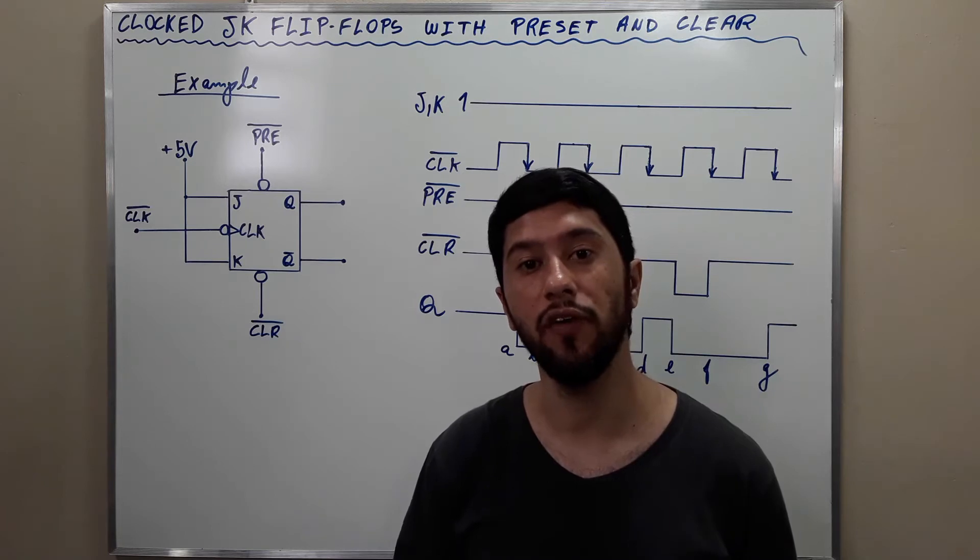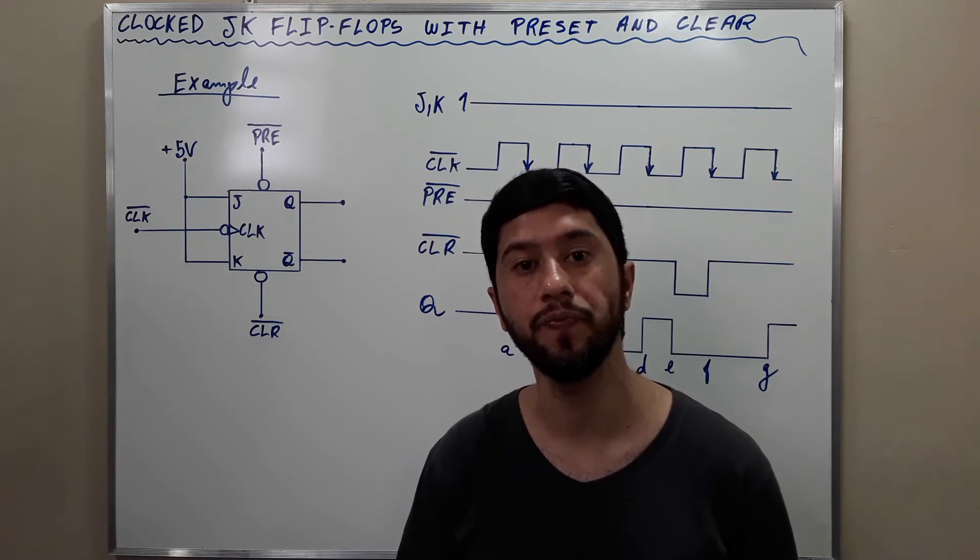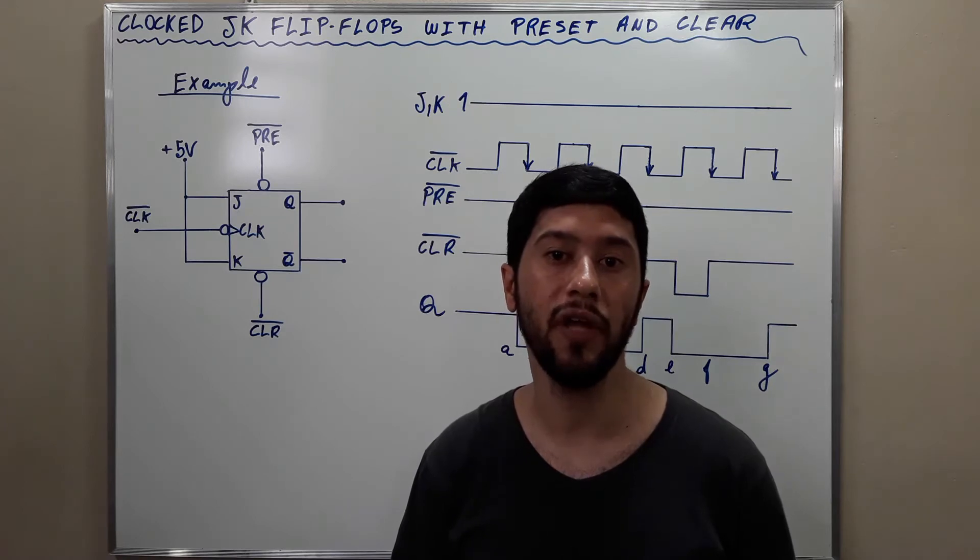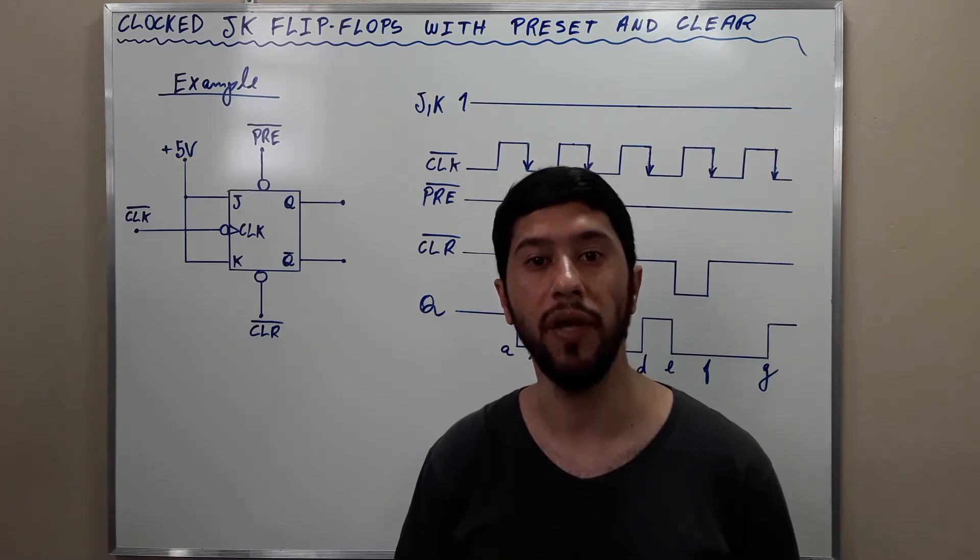For the clocked JK flip-flop, J and K I call the synchronous inputs because their effect is synchronized with the clock signal. However, preset and clear are called asynchronous inputs because the operation is independent from the synchronous inputs and the clock.